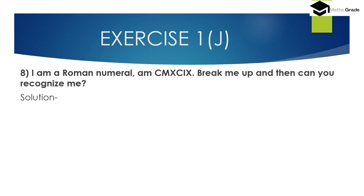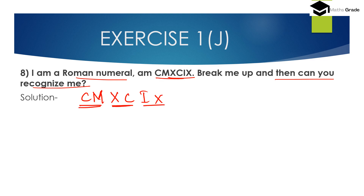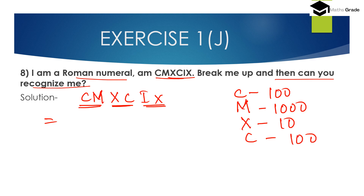Question number 8: 'I am a Roman numeral — I am CMXCIX. Break me up and can you recognize me?' We need to find the Hindu-Arabic numeral for CMXCIX. We break it into: CM, XC, and IX. C has value 100, M has value 1000, X has value 10, C has value 100, I has value 1, and X has value 10.